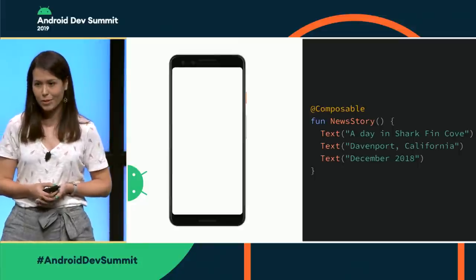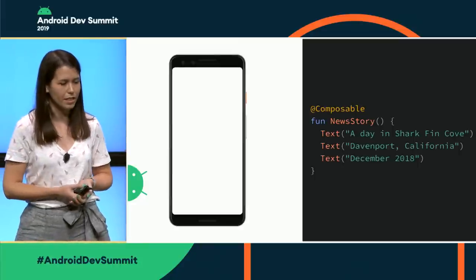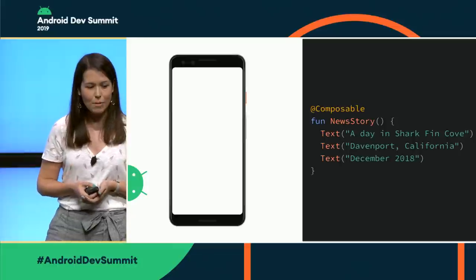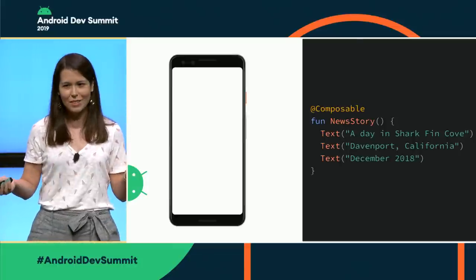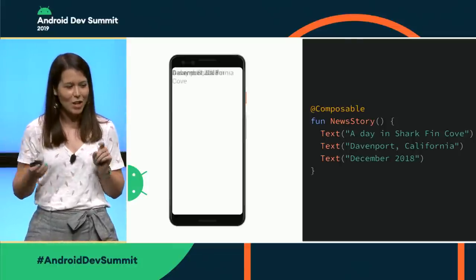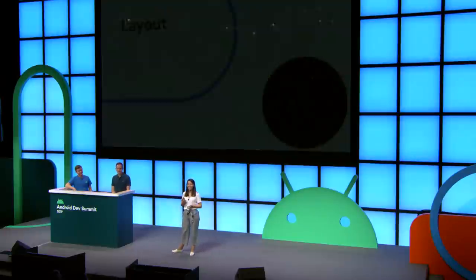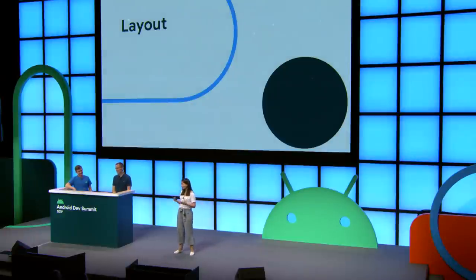You can emit several composables within a composable function. For example, to build a news story, we can emit a title, subtitle, and date. But you'll find you need an opinion on how your UI should appear, because if you just emit those three texts without layout, they'll stack oddly. This is where concept number two — layouts — comes in. We provide a bunch of layouts out of the box. For example, wrapping those three texts in a Column — the equivalent of a vertical LinearLayout — places everything one on top of the other.